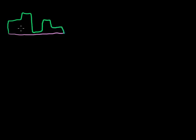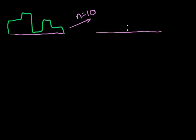We've seen multiple times — you take samples from this crazy distribution. Let's say n is equal to 10. So we take 10 instances of this random variable, average them out, and then plot our average. We keep doing that, taking 10 samples each time, averaging them, plotting them. Eventually you do this an infinite number of times, and you're going to approach the sampling distribution of the sample mean.